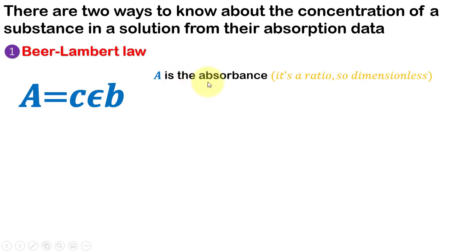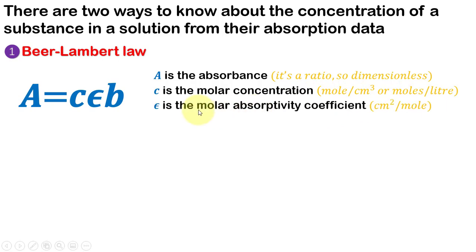where A is the absorbance. As it is a ratio, therefore it is dimensionless. c is the molar concentration which is measured in mol per cm³ or mol per liter.